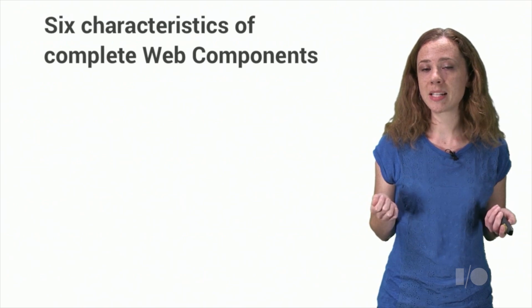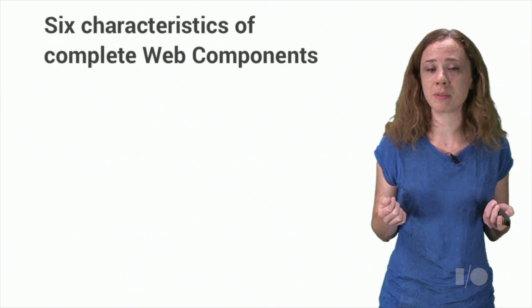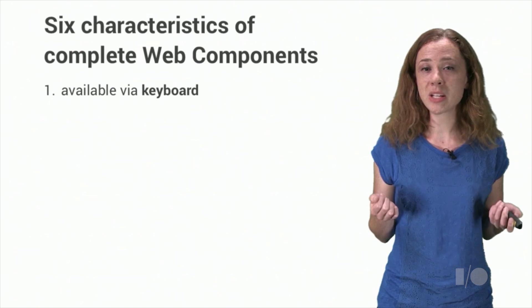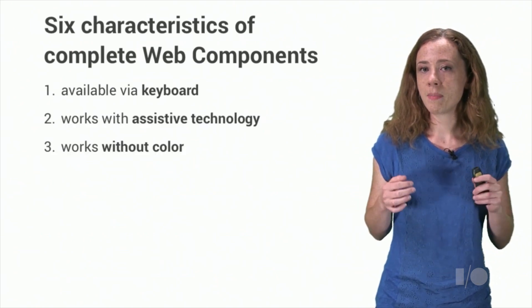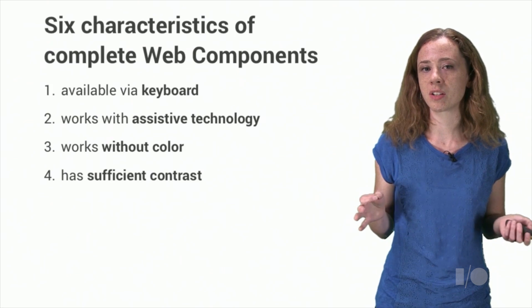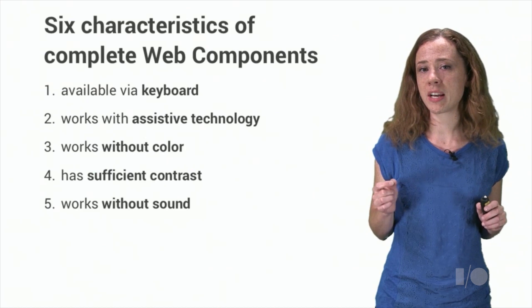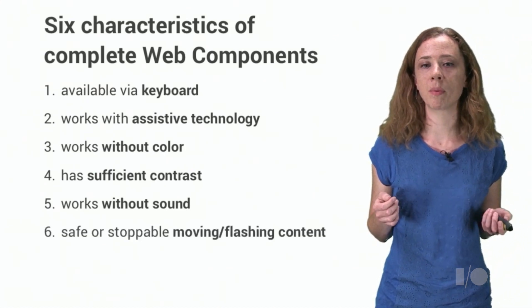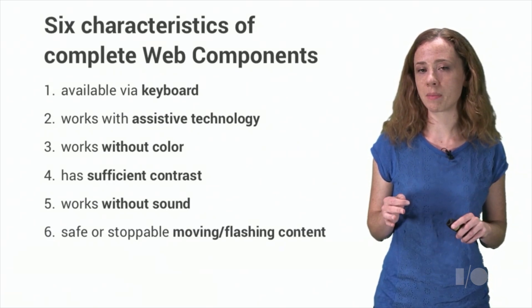So let's recap and summarize everything into a handy list. Remember, every built-in HTML5 element will have all of these properties, at least in a mainstream browser, so we should make sure that custom elements do too. Make sure that your element can be used with the keyboard alone. Make sure that it works with assistive technology. Make sure that it doesn't rely on color to communicate important information. Make sure all text and icons have sufficient contrast ratio with the background. Make sure that it works without sound. I didn't cover this, but make sure any video or audio elements have the appropriate text alternatives, and make sure you aren't relying on audio cues to prompt for actions. And finally, make sure any moving or flashing content is configurable and safe.